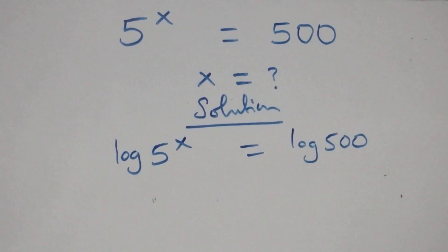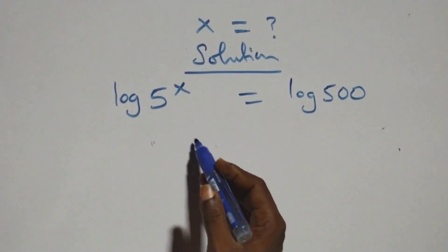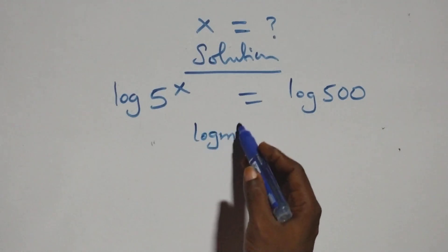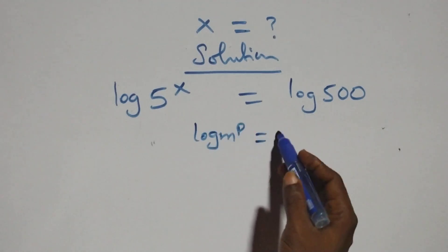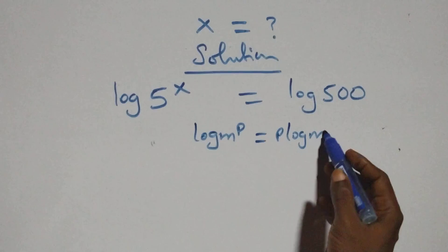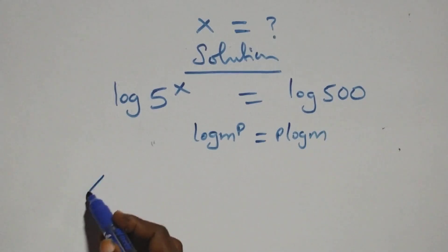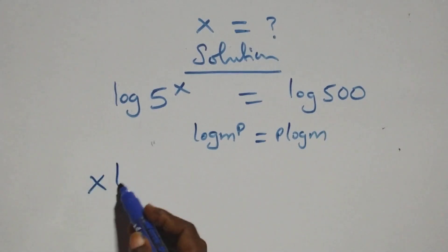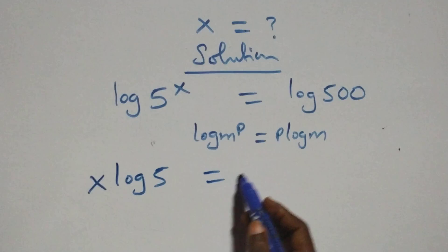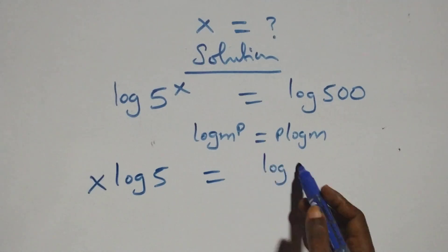The next step: apply the power law of logarithm. When we have log m raised to power p, this is the same thing as p times log m. So here this becomes x log 5 equals to log 500.